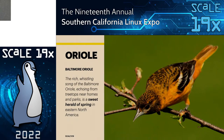Oriole is Baltimore Orioles — the bird — and it's the bird that shows up during springtime. So we're thinking this could be a nice springtime for Postgres, future things to look forward to.